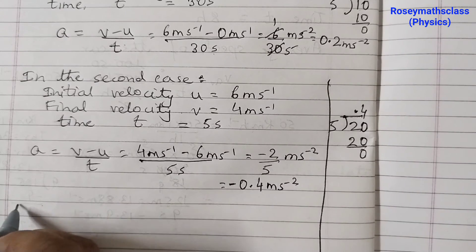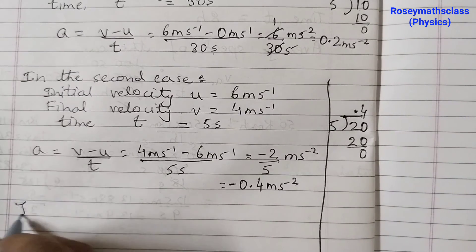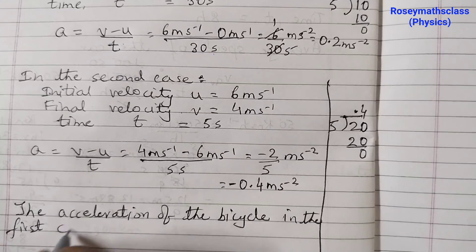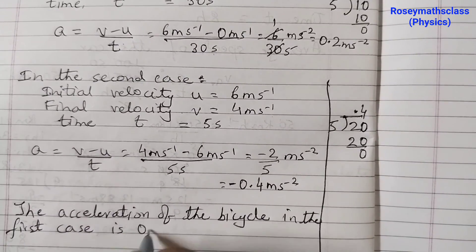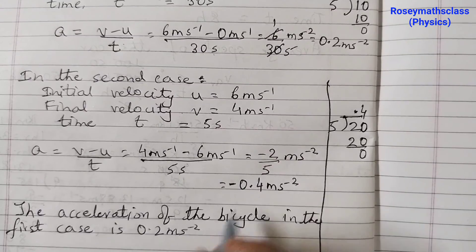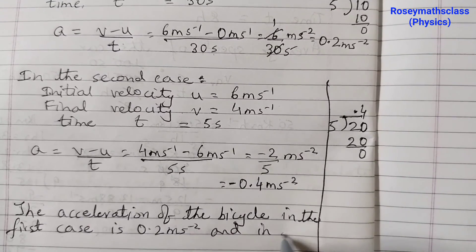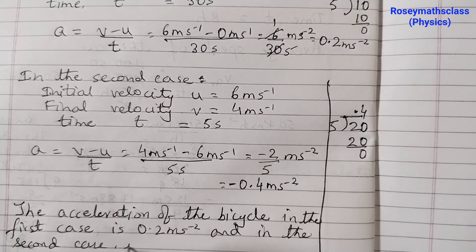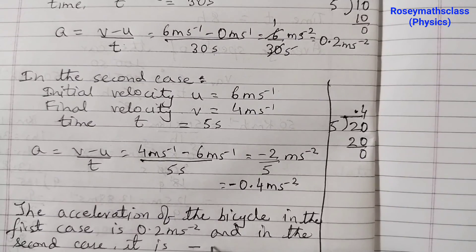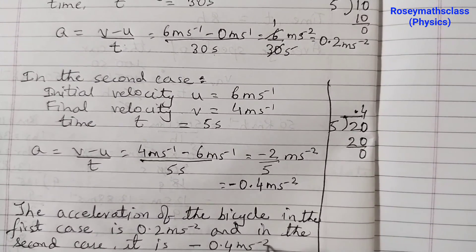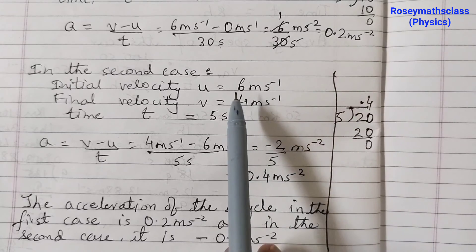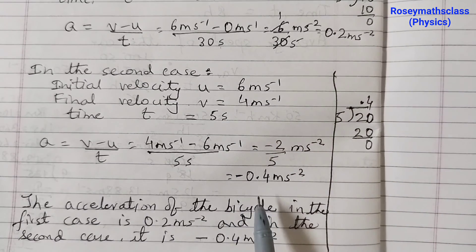The acceleration of the bicycle in the first case is 0.2 meters per second squared, and in the second case is −0.4 meters per second squared. When the velocity increases from 0 to 6, the acceleration is positive. When the velocity decreases from 6 to 4, the acceleration is negative. That's all for now, see you in the next video.